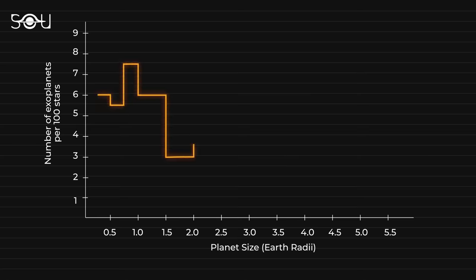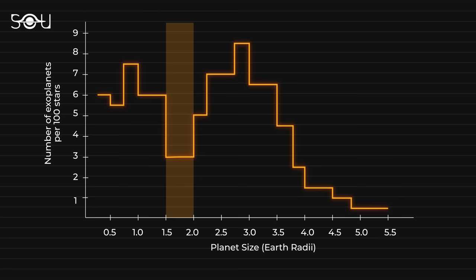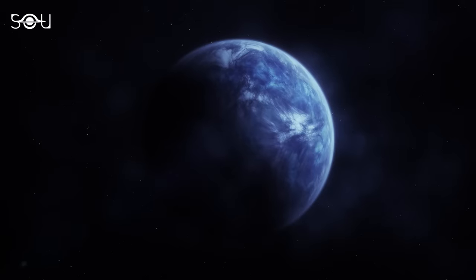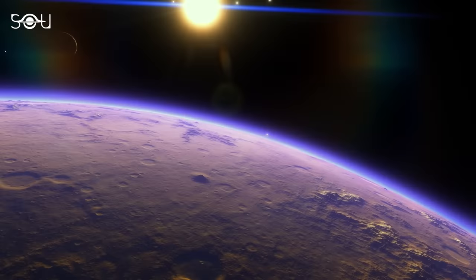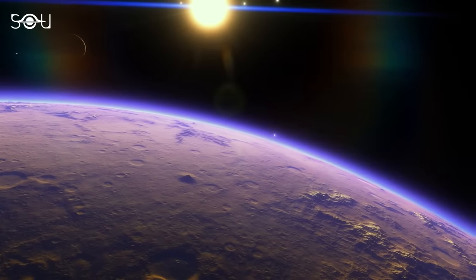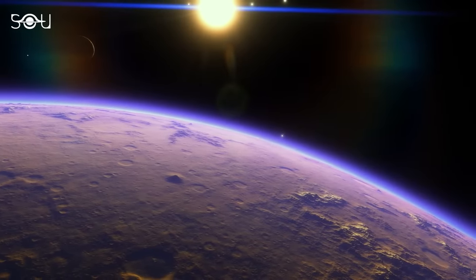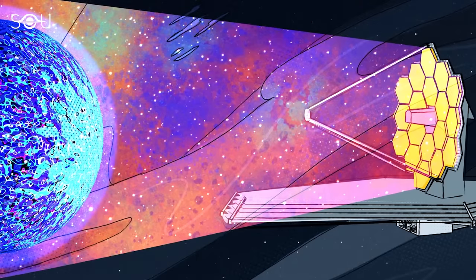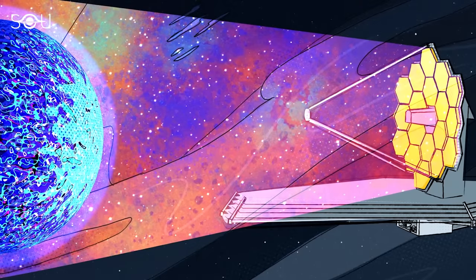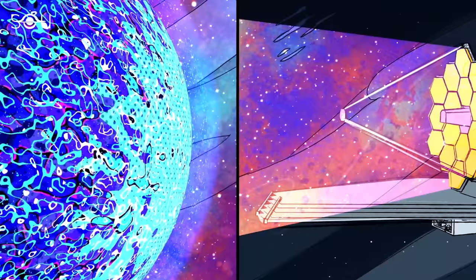Exoplanets residing within the radius valley, like TOI 733b, could hold the keys to decoding the mysteries of this valley. This exoplanet, in particular, is an excellent subject for such studies. It represents a small yet potentially vital piece of the exoplanet science puzzle. Consequently, future follow-up observations by high-precision instruments will certainly provide data worth close examination.